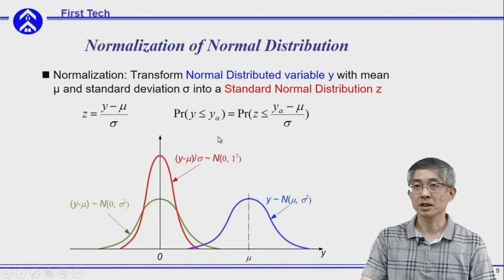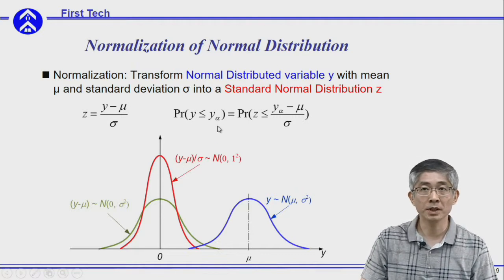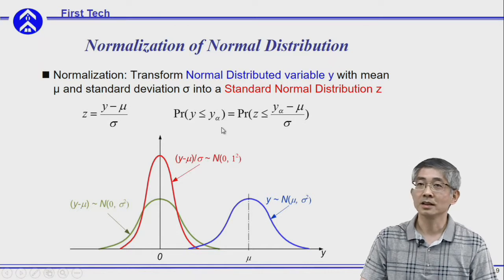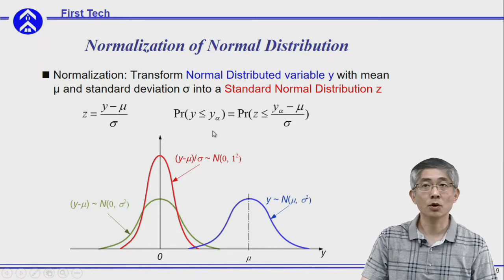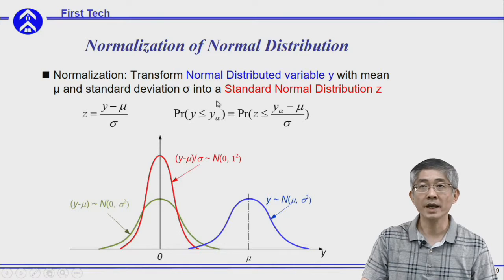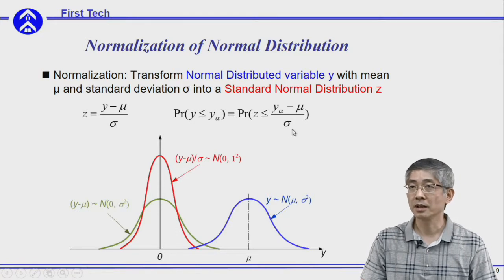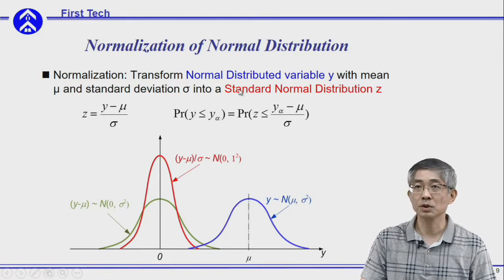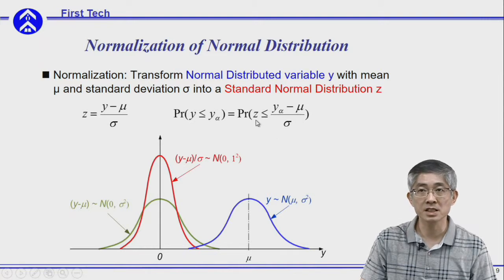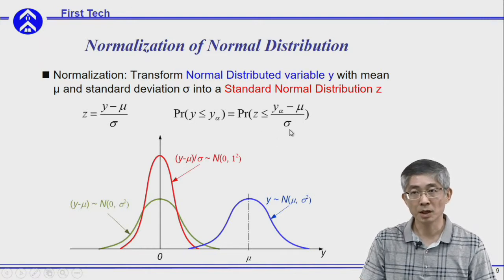Using this technique, if you want to find the probability of y smaller than y-sub-alpha, you just find the corresponding z value for y-sub-alpha using the normalization equation shown here. Then you can use the previous table to look up the probability of z smaller than that number, and you get your answer.